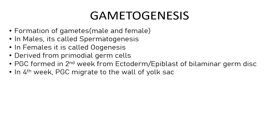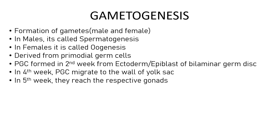In about the fourth week, these primordial germ cells actually start migrating from the point where they were formed to the wall of the yolk sac. Along their journey as they are moving toward the yolk sac, they are actually proliferating — dividing mitotically to produce more and more primordial germ cells.